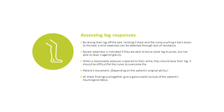Assessing Leg Responses — by raising the patient's leg off the bed, holding it there, and the nurse pushing it back down, a mild weakness can be detected through lack of resistance. A saddle weakness is indicated if they can move the leg muscles but are not able to raise it against gravity. When downward pressure is applied to their ankle, they should raise their leg — it should be difficult for the nurse to overcome the patient's movement. All these findings together give a good overall picture of the patient's neurological status.